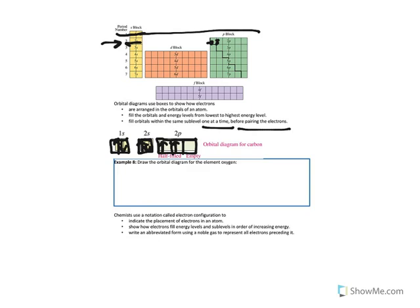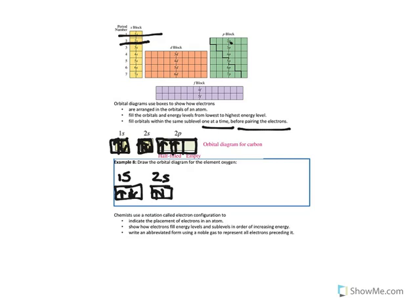Let's draw the orbital diagram for oxygen. If you look at your periodic table, you will see that oxygen is two spots past carbon. Starting at the beginning, oxygen has a full 1s — we draw one box with two electrons. The 2s is also full, so we draw a box with two arrows. Now oxygen is within the 2p and has 4 electrons there. Our 2p can hold up to 6, with 3 orbitals. We place one electron in each of the three boxes, and since we still have one more to place, that one must share — we place it in the first box pointing down. Electrons do not share unless they must, and you fill across the periodic table left to right.